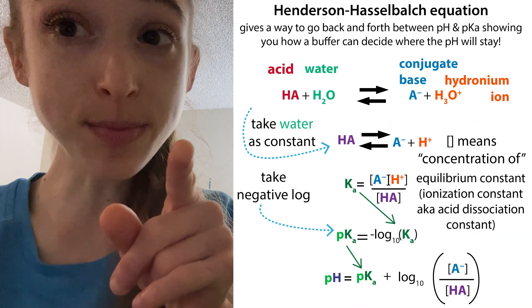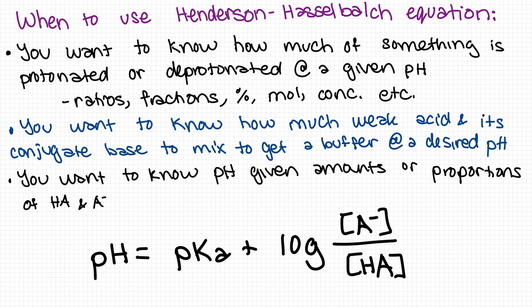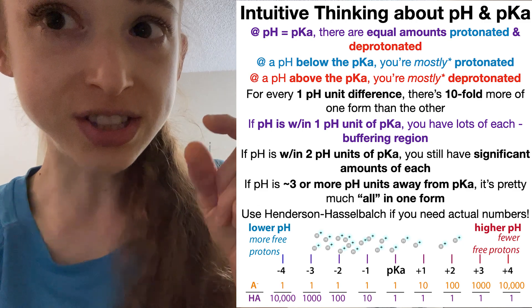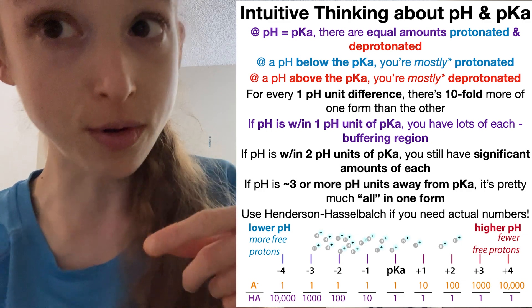This is a really intuitive way to think about things and realize you don't always have to do the fancy math. The Henderson-Hasselbalch equation is still important — it lets you calculate exact moles of conjugate acid and conjugate base, figure out how much to mix to make a buffer of a certain pH, or calculate how pH changes with a given amount of acid or base. But a lot of times we can use this intuitive thinking when we just need a sense of whether something is mostly in one form or the other.